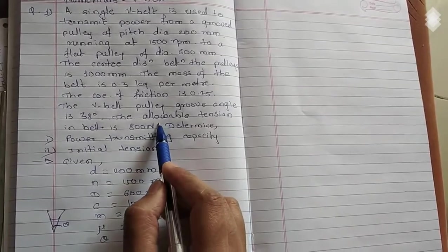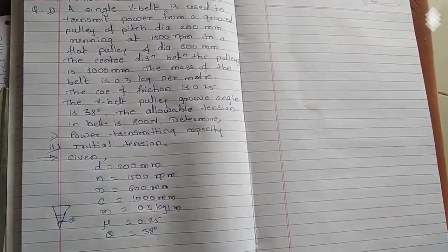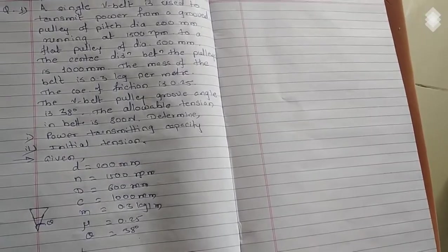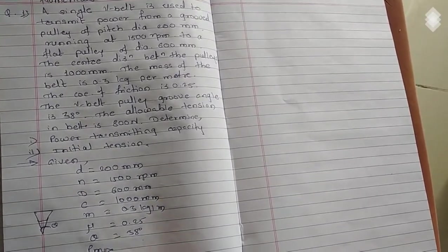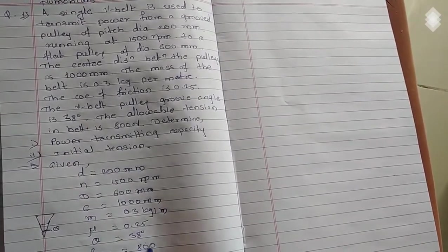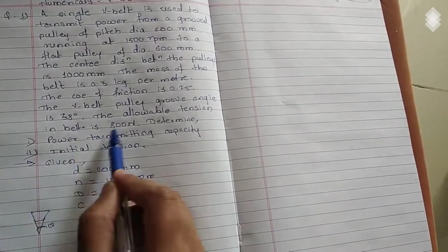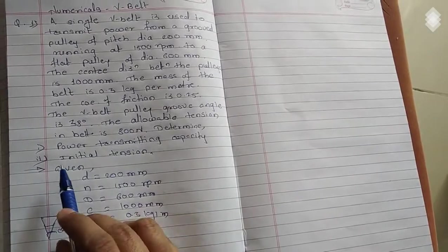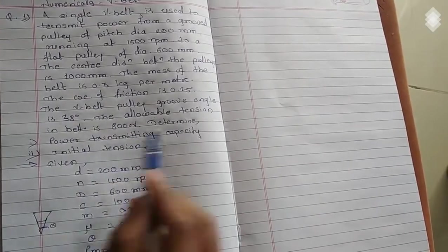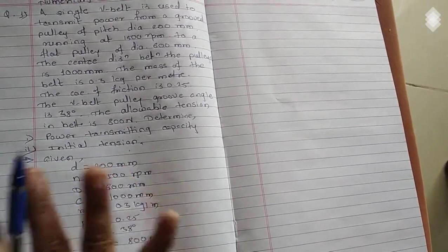Then allowable tension is given, that is P max 800. So it is allowable tension, or we can say that maximum tension of the belt. Then they ask, determine the power transmitting capacity and initial tension in V-belt.